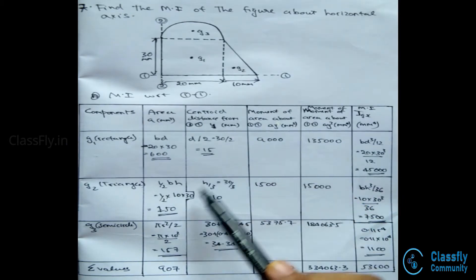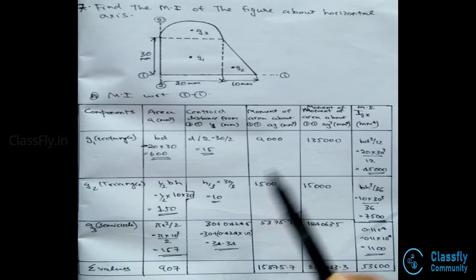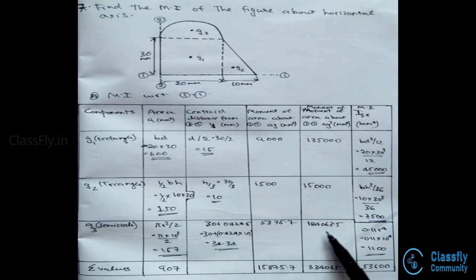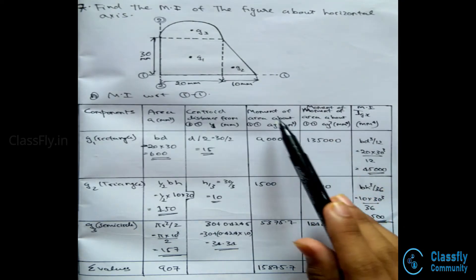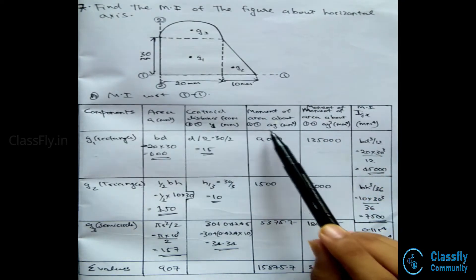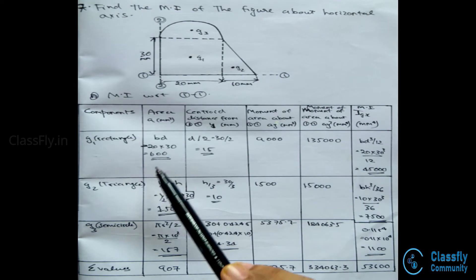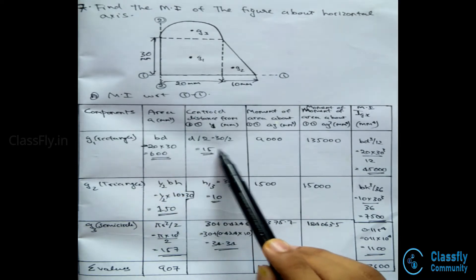The moment of area about 1-1, that is A·y, will be 600×15, which equals 9000. Also, A·y² will be 600×15², which equals 13500.